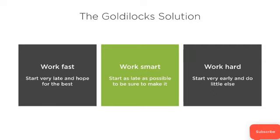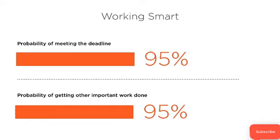What you're looking for is the Goldilocks solution. At one end, you work fast — you start late and hope for the best. At the other end, you work hard — you start very early and do little else. The middle path, working smart, is the best. You want to start work on your project as late as possible but still be sure of making your deadline. Working smart means a 95% probability of meeting the deadline and a 95% probability of getting other important work done as well.